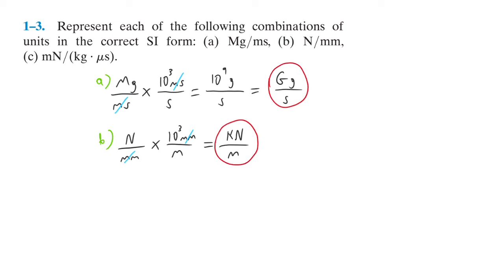For part C, we have million Newton per kilogram microsecond, so we want to convert that to seconds. For every second there are 10 to the 6 microseconds, so those cancel.